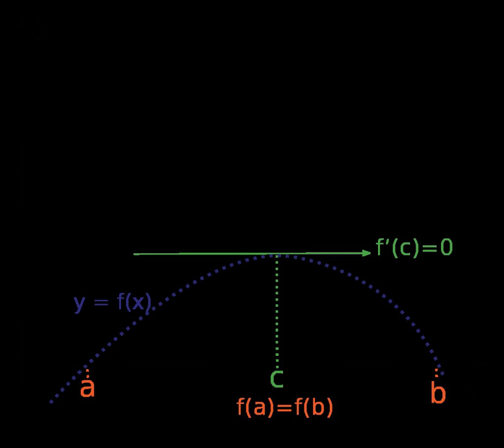exist in the extended real line [−∞, +∞], then there is some number c in the open interval (a,b) such that one of the two limits f'(c+) and f'(c−) is ≥ 0 and the other one is ≤ 0 in the extended real line.